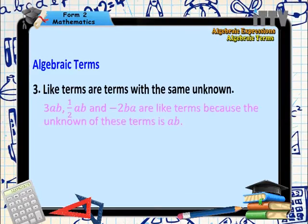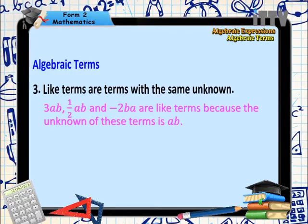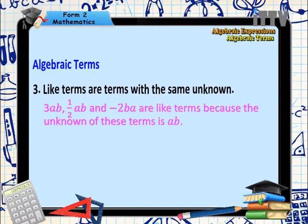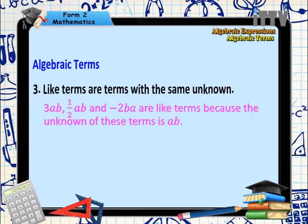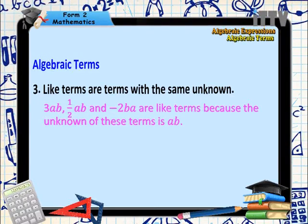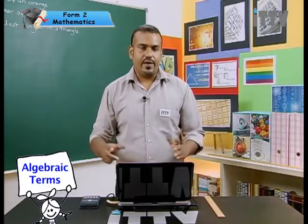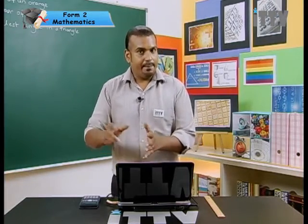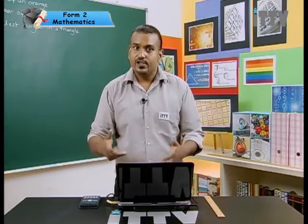Like terms are terms with the same unknown, such as 3AB, half AB, and negative 2BA. These are all like terms because the unknown of these terms are only A and B. Now, boys and girls, you have to understand that if I write AB or BA, I am referring to the same unknowns, right?